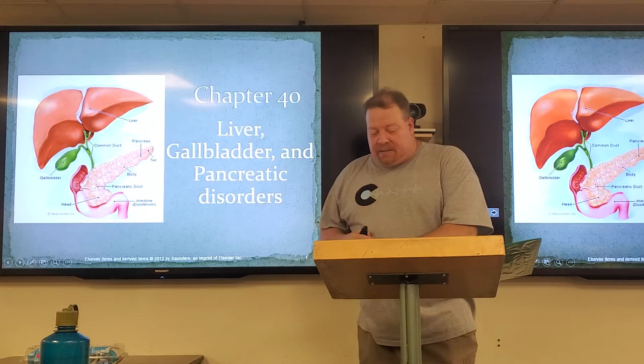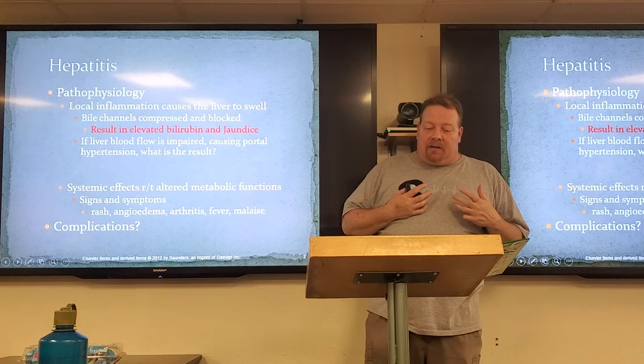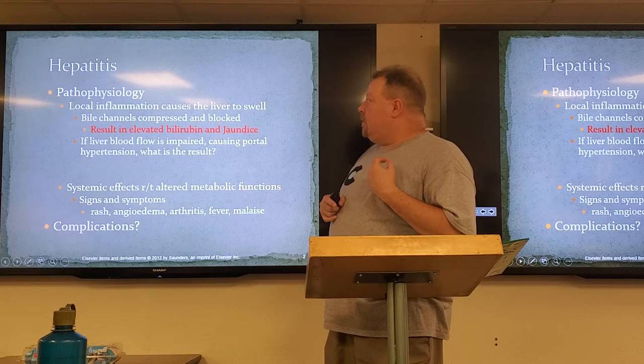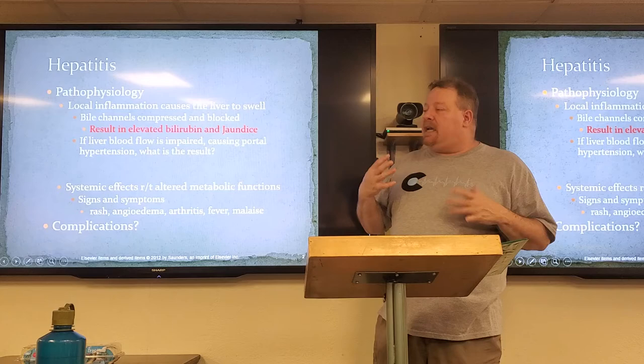Let's talk about the liver, gallbladder, and pancreatic hepatic disorders. Hepatitis pathophysiology: local inflammation causes the liver to swell, causing compression of the bile channels, and the fluid flowing through it will become blocked. This results in elevated bilirubin, which usually causes jaundice in the skin. We can usually tell that by the yellow discoloration of both the sclera, the eyes, the skin, and the mucous membranes.